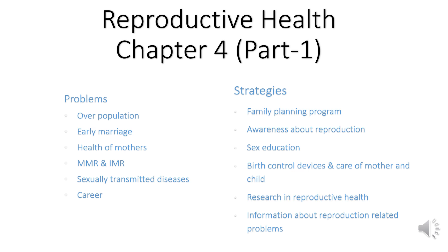Good morning students. Our unit on reproduction is ongoing, and this is the last chapter: Reproductive Health. The term reproductive health simply refers to healthy reproductive organs with normal functioning. But according to the World Health Organization, reproductive health means total well-being in physical, emotional, social, and behavioral aspects of reproduction. Thus, a reproductively healthy person has physically and functionally normal reproductive organs and normal behavioral and emotional interactions in all sex-related aspects.